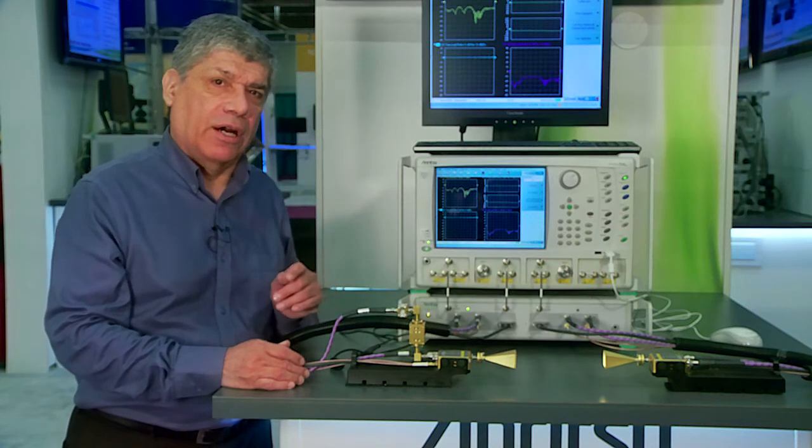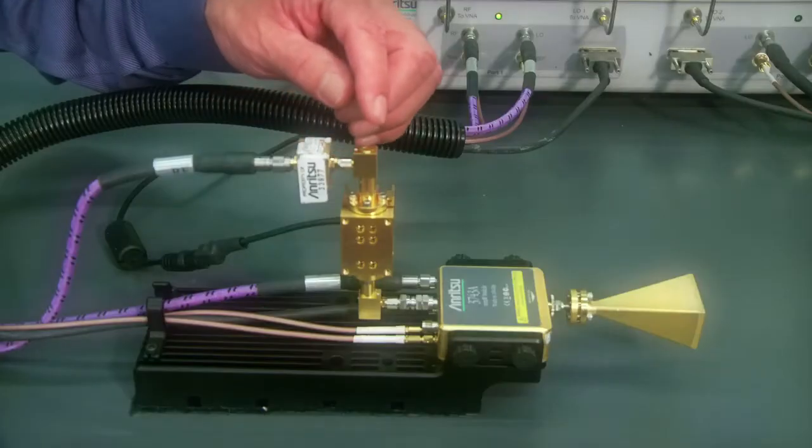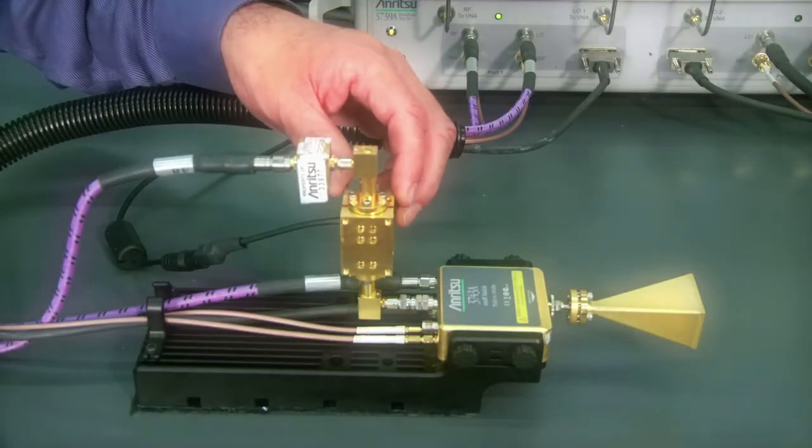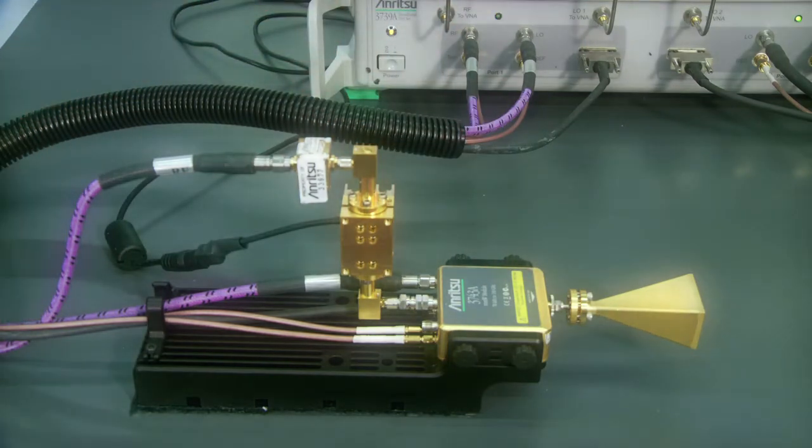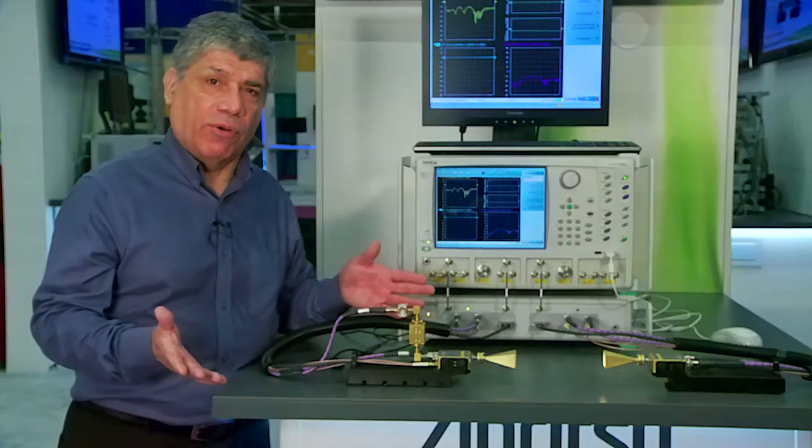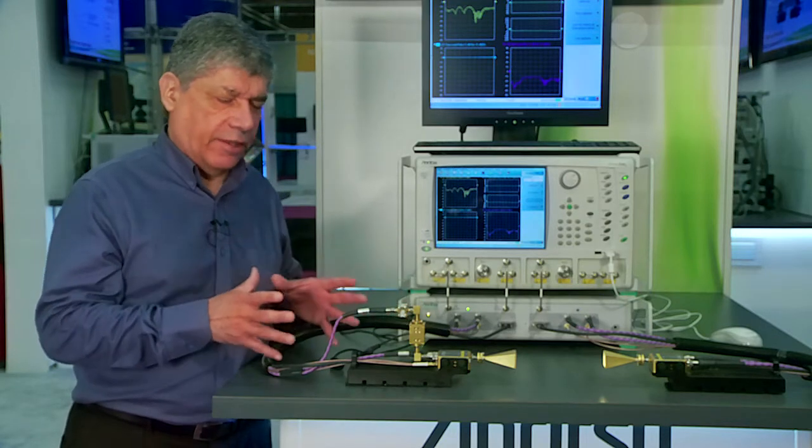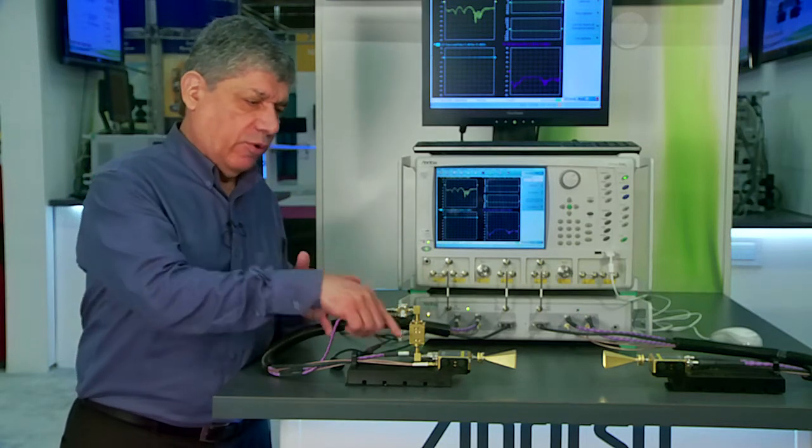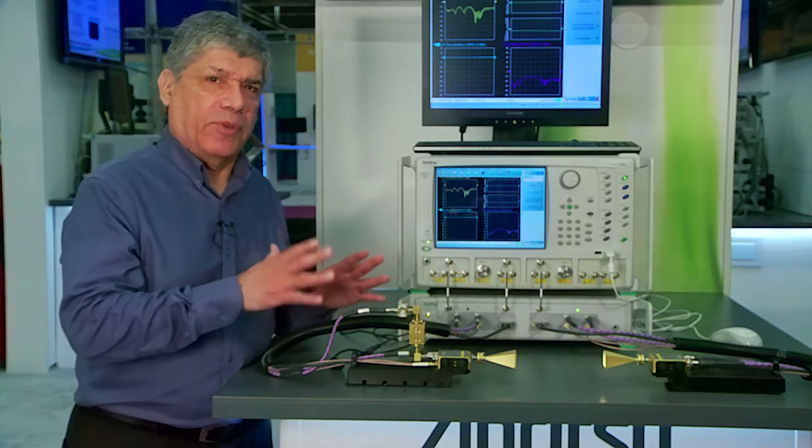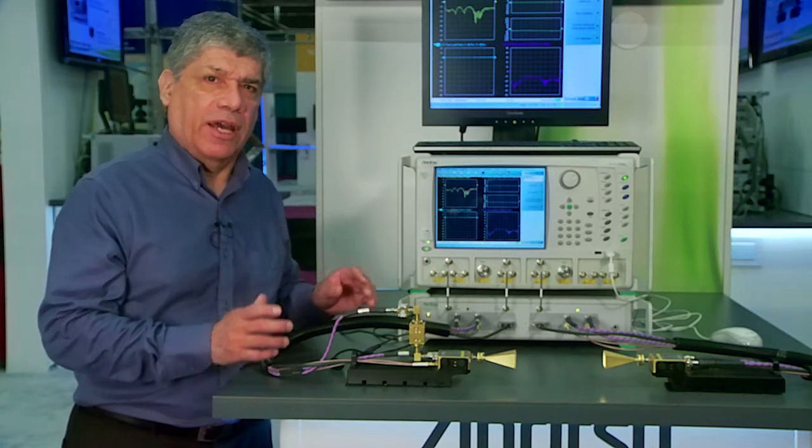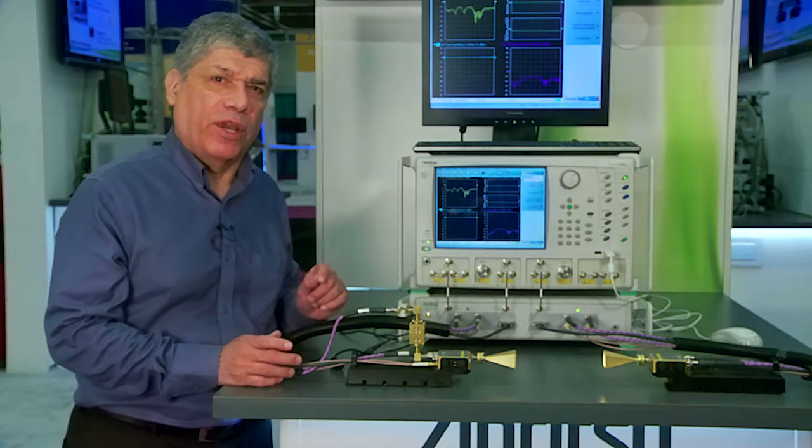In this case, what we're doing is we're driving it with the VectorStar VNA through a multiplier before amplification. If you had your own source, you could add that as your source through the module. So we're just using the module now as our test and reference samplers in order to make your S-parameter ratio measurements.